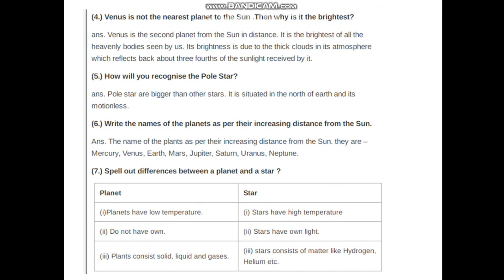Spell out differences between a planet and a star. Planets have low temperature, but stars have high temperature. Planets do not have their own light, but stars have their own light. Planets consist of solid, liquid, and gases, but stars consist of matter like hydrogen, helium, etc.